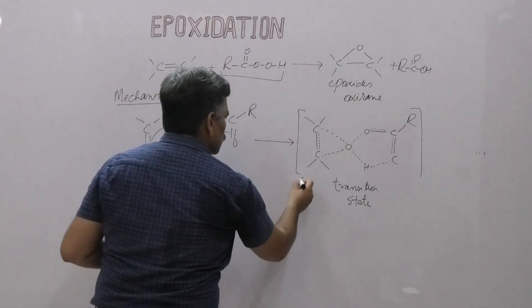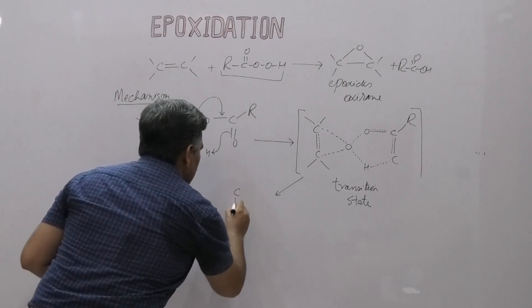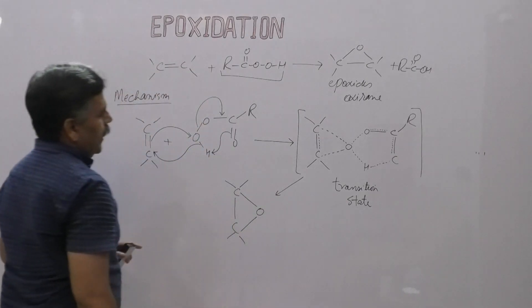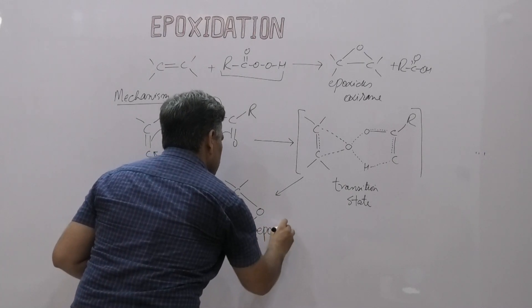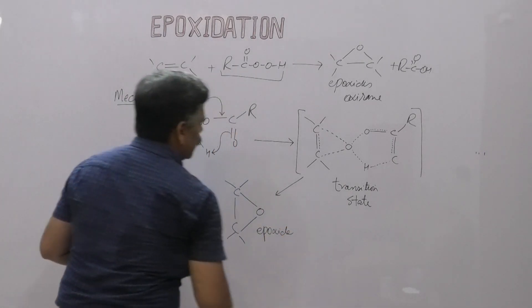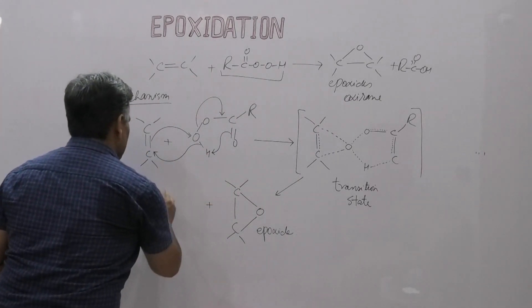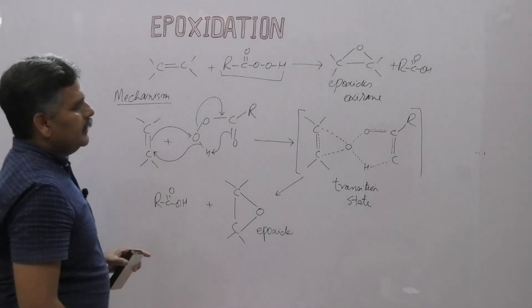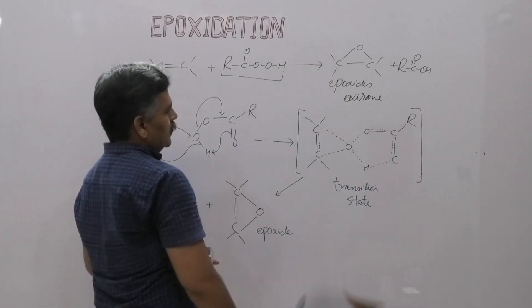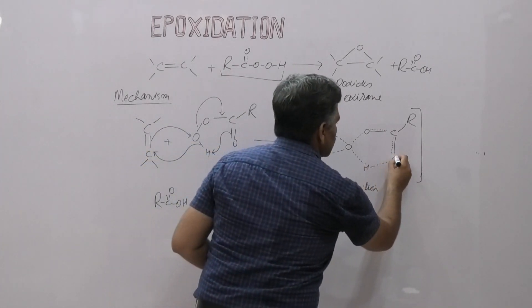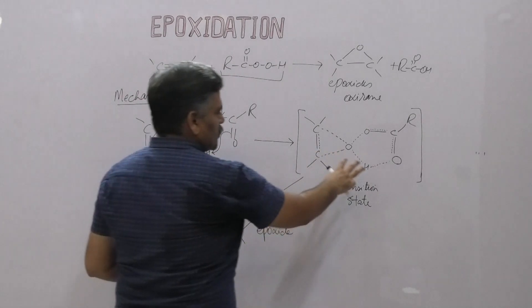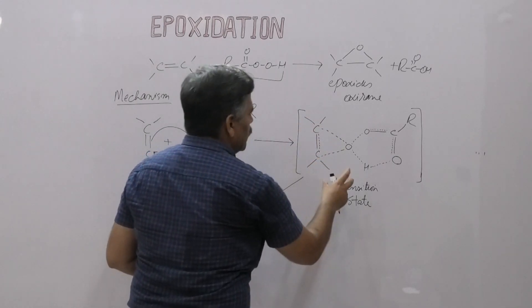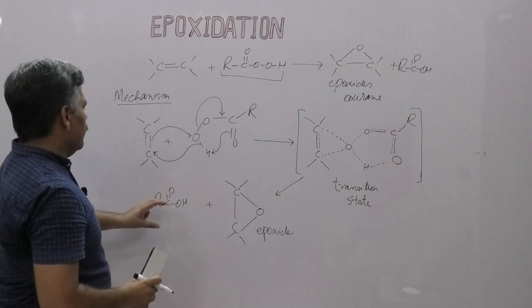When this transition state is converted into the product, we have the carbon-carbon-oxygen three-membered ring — the epoxide is formed. It is formed along with the formation of carboxylic acid. In this transition state, we can see different bonds are cleaved and formed at the same time. That's why we get this epoxide. Oxygen adds on the same face of the carbon-carbon double bond.